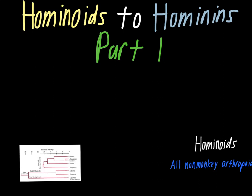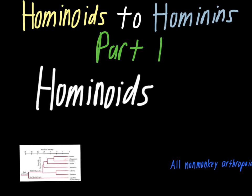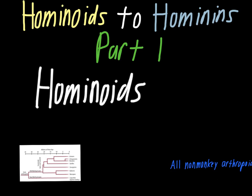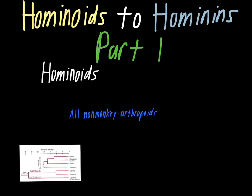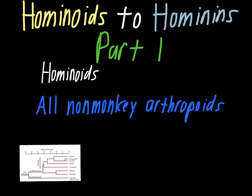This video is part of a two-part series talking about the transition from hominoids to hominins. One of the first things we have to talk about when discussing hominoids is what exactly they are. Hominins are the group that modern people are a part of. Hominoids is a broader category that we would technically fall into, defined as all non-monkey anthropoids.